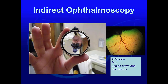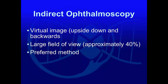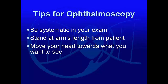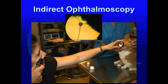Indirect will show you everything you want to see — it's getting used to it and doing it well that is the trick. Everything is upside down and backwards, but you get a large field of view. I tend to use a 30 diopter lens where I don't have to dilate the pupil; in a dark room it'll dilate well enough for a really good look. Be very systematic — I start at the optic nerve and go quadrants like around a clock, always in the same order, starting with the left eye first.